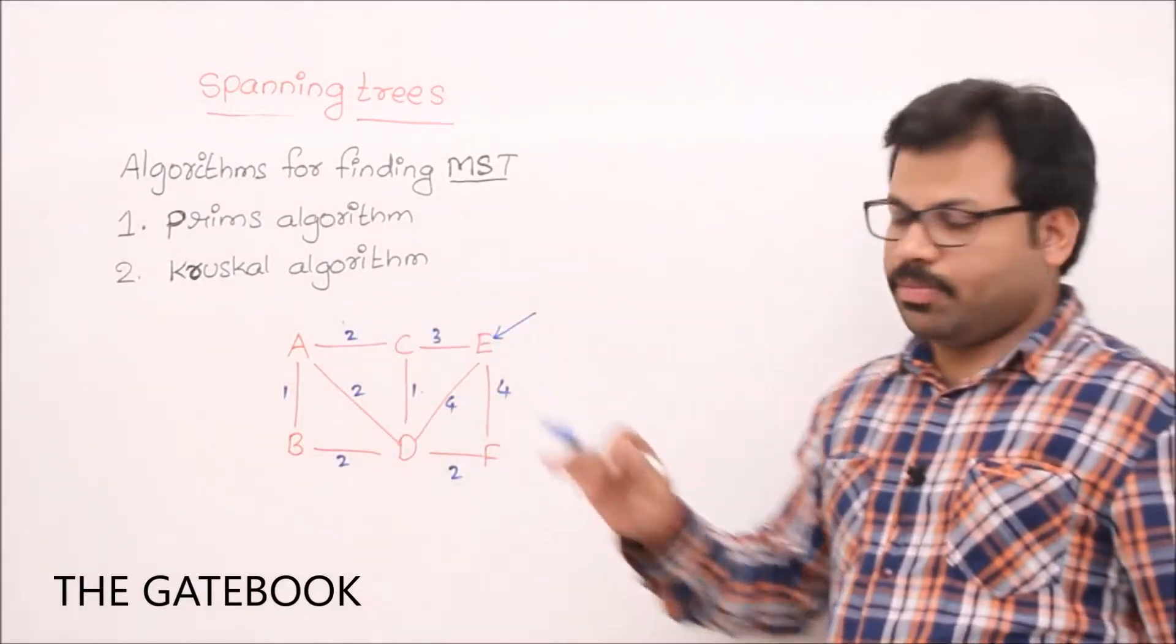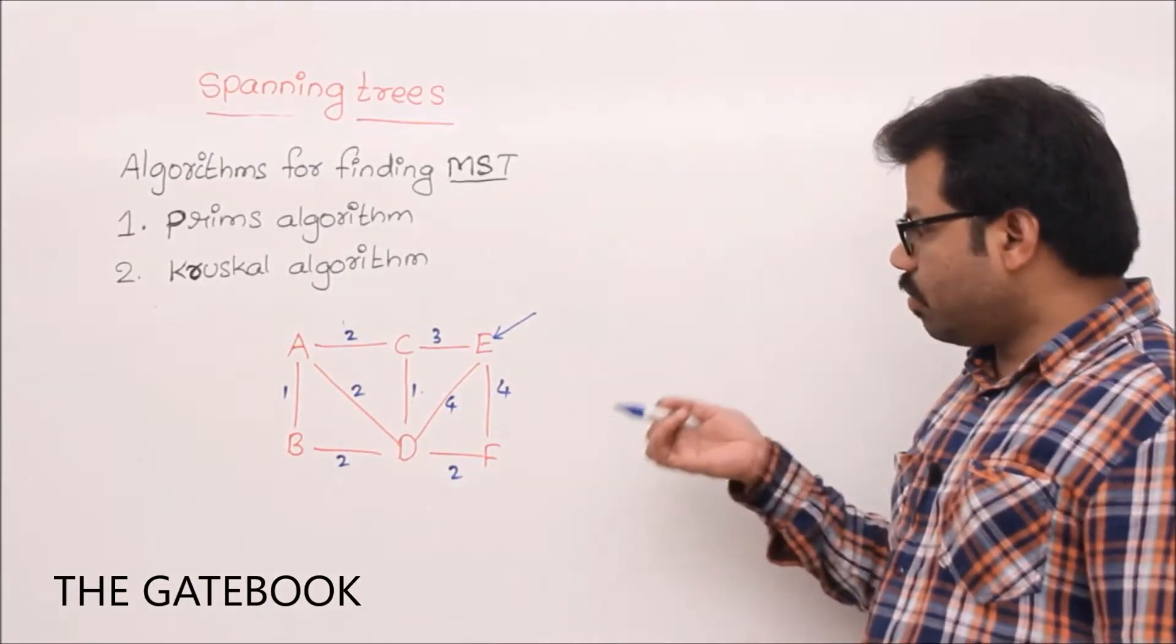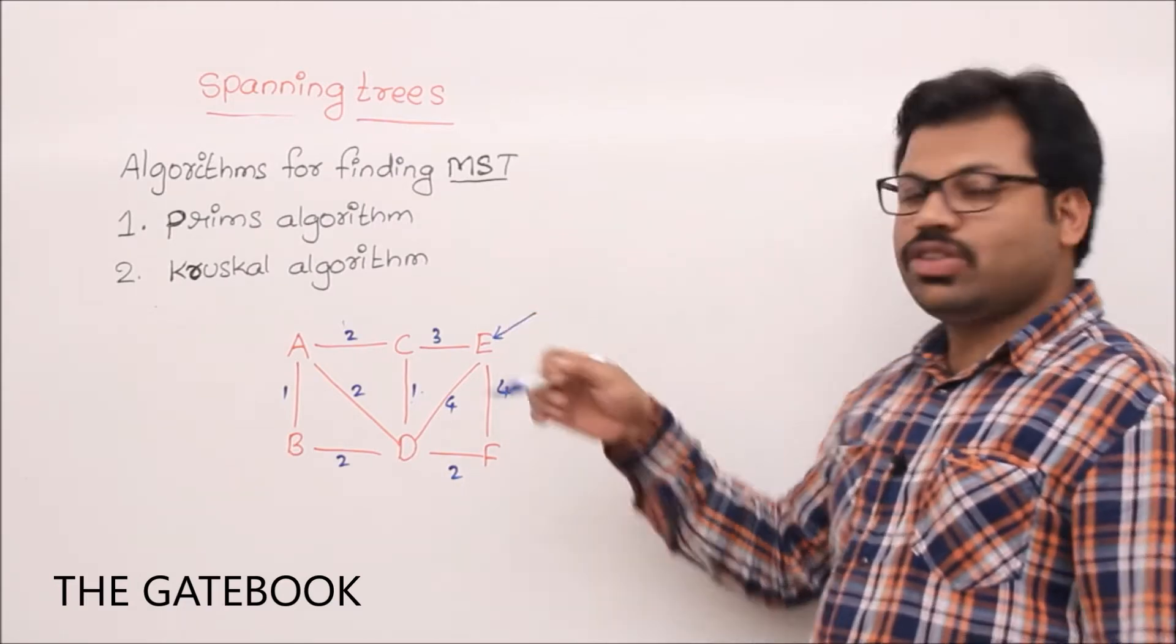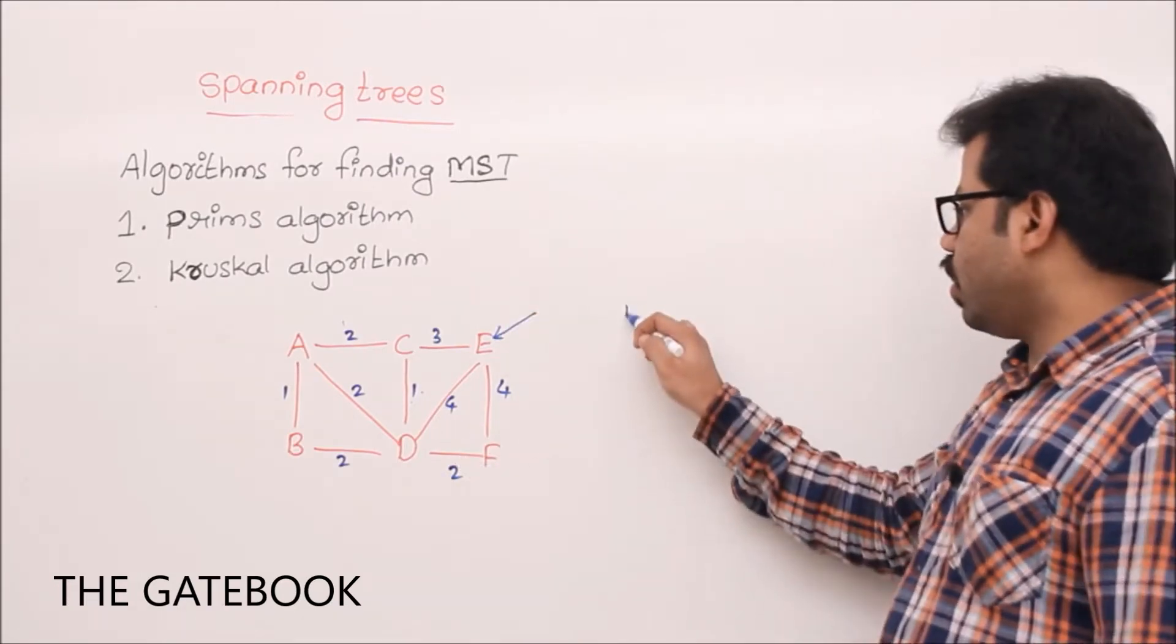We'll see how Prim's algorithm works for this problem. So, here initially, something should be source vertex. Let me take E as source vertex, anything random. So, if E is source vertex...